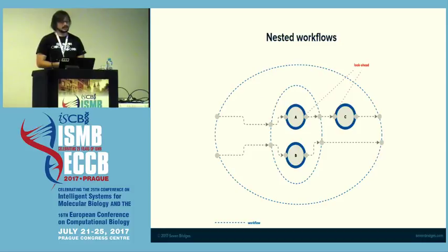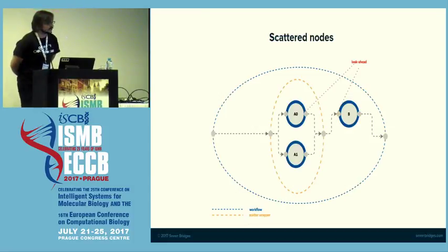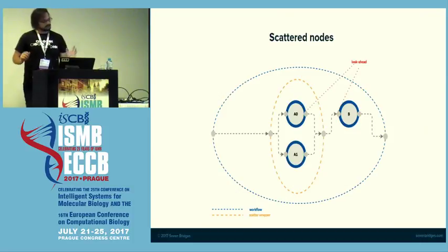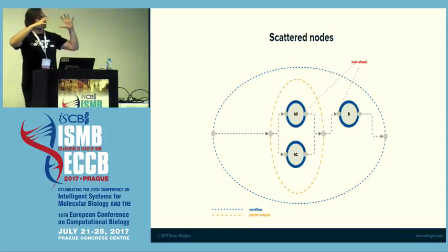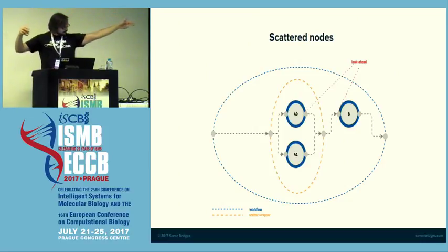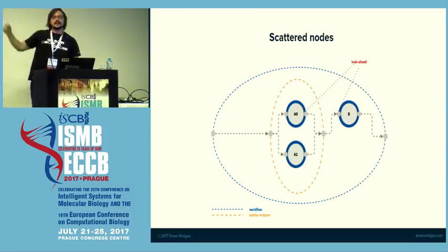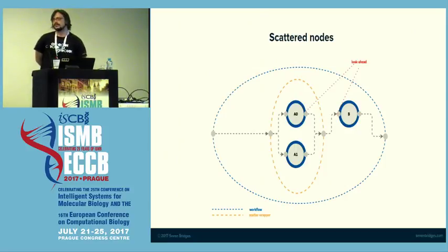The same algorithm is reused for executing scatter nodes. When you scatter nodes, we create a scatter wrapper node — similar to the nested workflow diagram — where the scatter node acts as a container node. So once A0, the parallelized A tool, finishes, we can continue execution and scatter again if possible, without waiting for every parallelized node to complete.